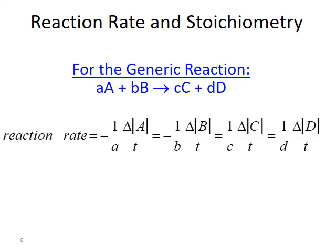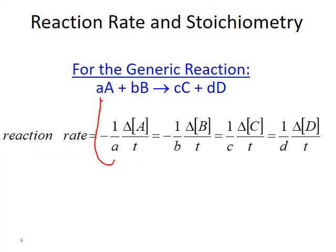We do this by dividing the individual rates by their coefficients from the balanced chemical equation. Using a generic reaction with reactants A and B and products C and D — where lowercase letters are coefficients and uppercase letters are chemical formulas — the overall reaction rate defined in terms of reactant A is the negative of the change in concentration of A over time, divided by the coefficient a. This incorporates a negative since we're dealing with a reactant and we want a positive value overall.